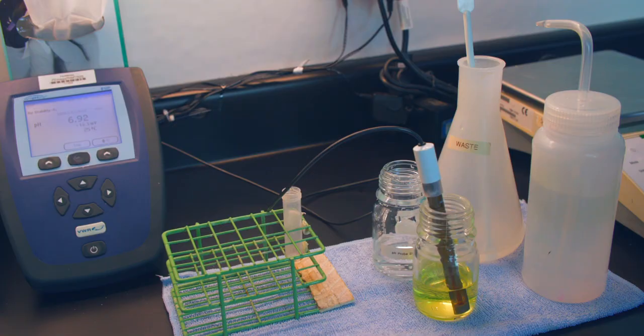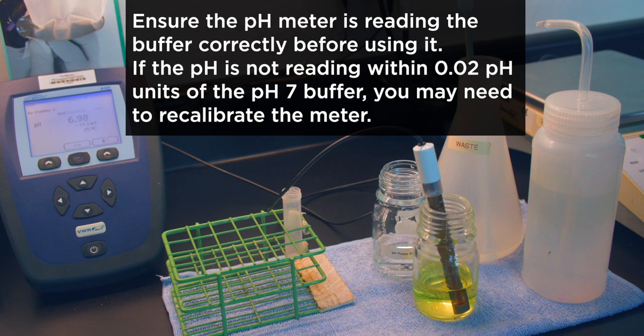Press read on the instrument, wait for the screen to say stable, and take note of your pH value. Ensure the pH meter is reading the buffer correctly before using it. If the pH is not reading within 0.02 pH units of the pH 7.00 buffer, you may need to recalibrate the meter.